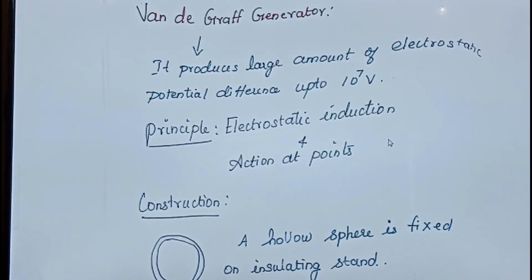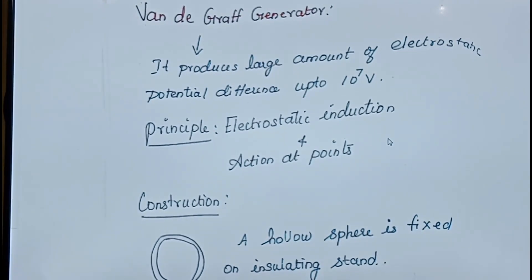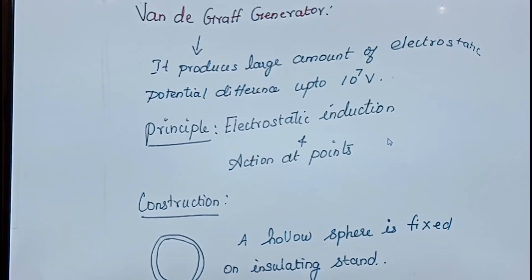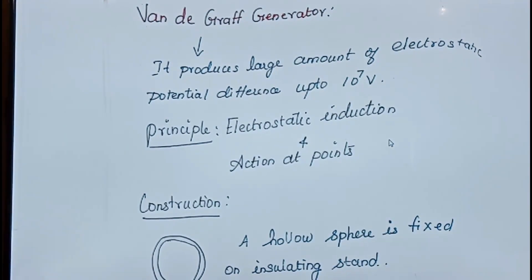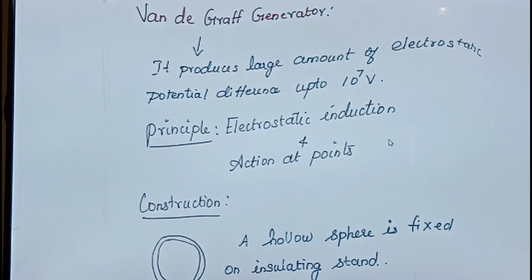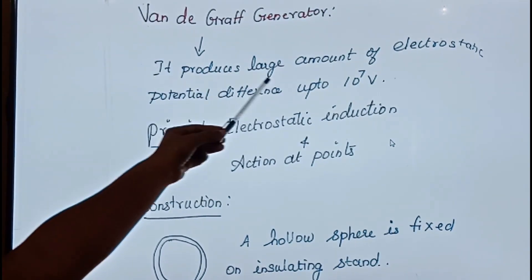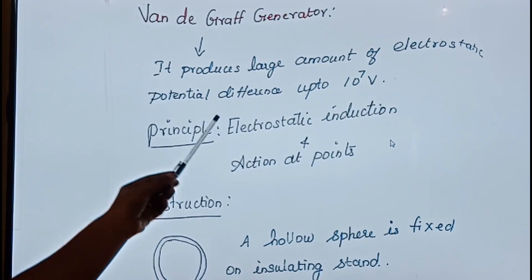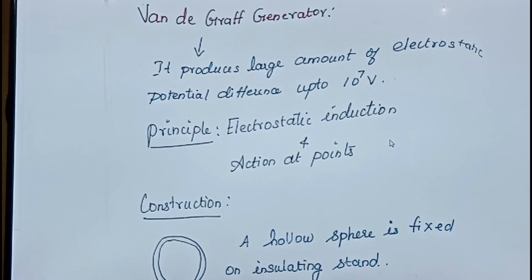Good morning everyone. Today we are going to see the topic Van de Graaff generator. So what is the Van de Graaff generator? It is just a device. If you use it, you can create a potential difference up to 10 power 7 volts. It produces a large amount of electrostatic potential difference up to 10 power 7 volts.